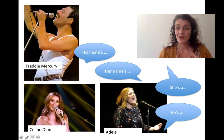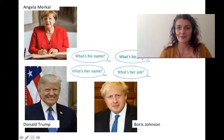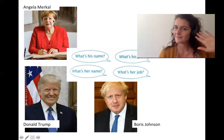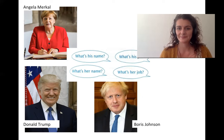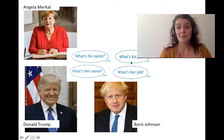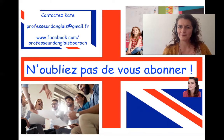What's her name? What's her job? Now you ask me. Her name's Angela Merkel. She's a politician. His name's Donald Trump. He's a politician. His name's Boris Johnson. He's a politician. Well done, that's great! Don't forget to subscribe. One more question: What's your name? What's your job? See you again!